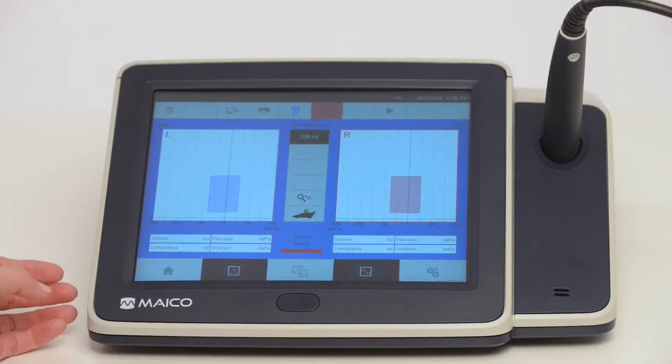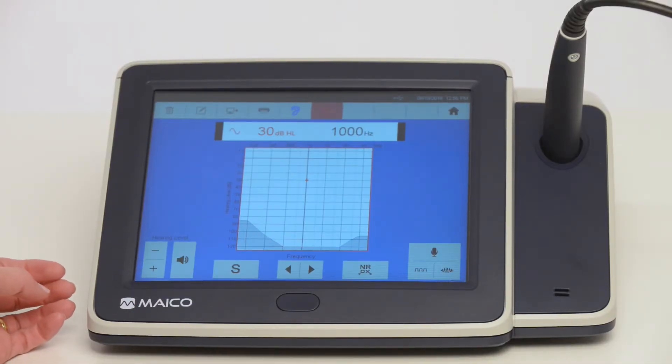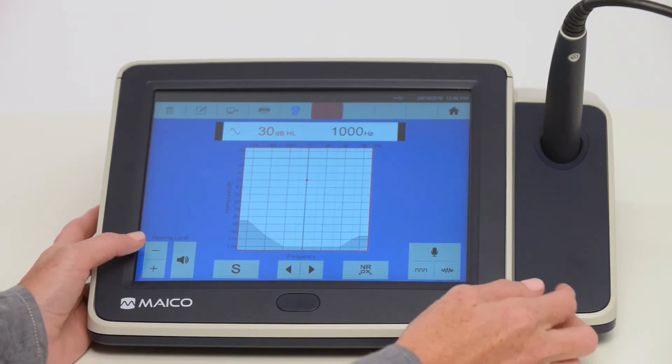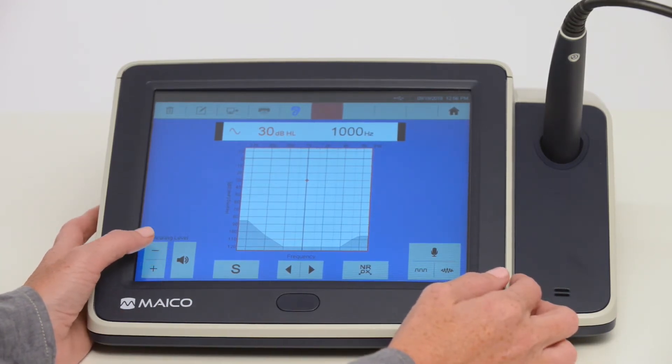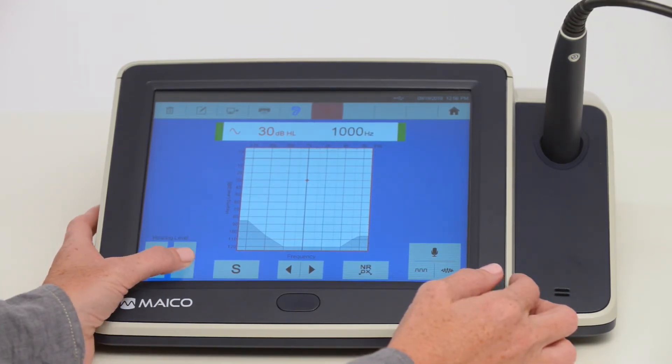Using the touch screen, select audiometry from the bottom row of icons. Select right or left ear. Selection of test frequency is with the frequency arrow buttons. Select the volume with the hearing level arrows. Touch the speaker button to present the tone.